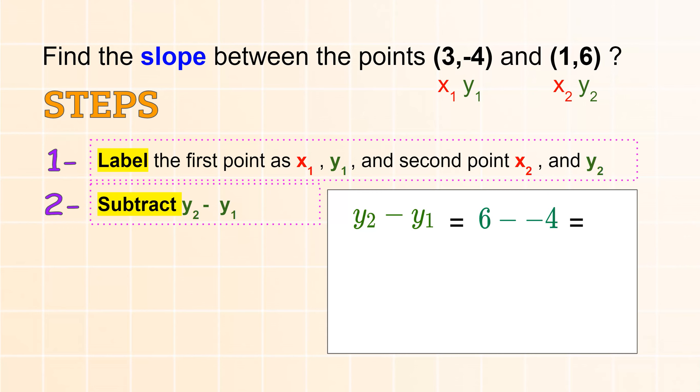The third step is to subtract the x's. So 1 minus 3 would be negative 2.